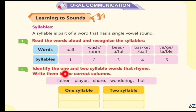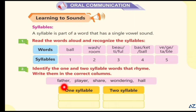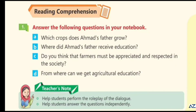Identify the one and two syllable words that rhyme and write them in the correct columns. Father — two syllables. Player — two syllables. Share — one syllable. Wandering — three syllables. Hall — one syllable.